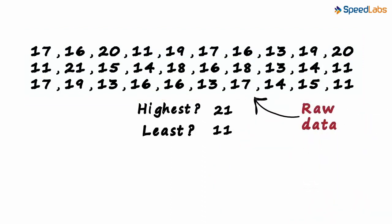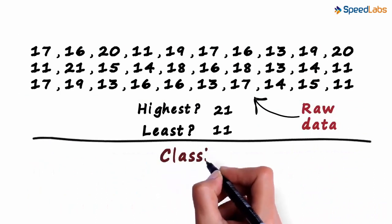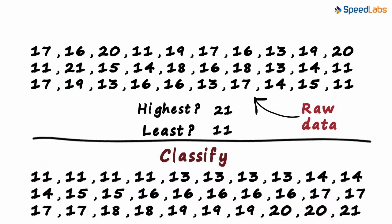What can we do to make life simpler? We can classify the data. This is one way to classify it. We have arranged the data from the least number to the highest one. You can see that it's 11, 13, 14 and so on up to 21.